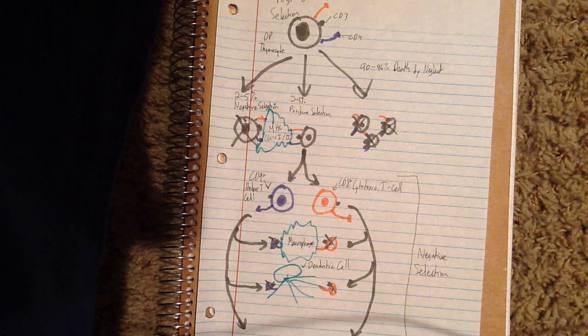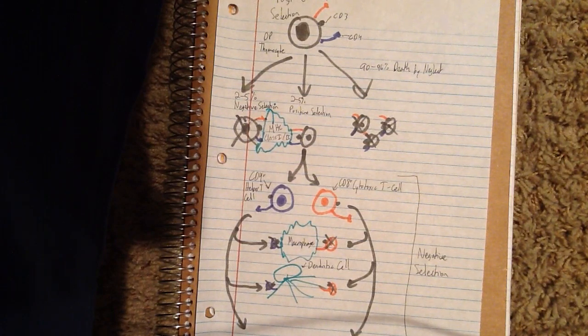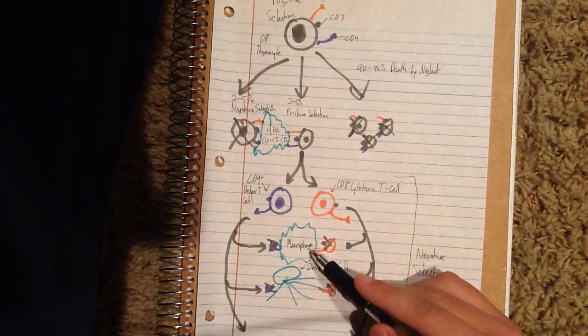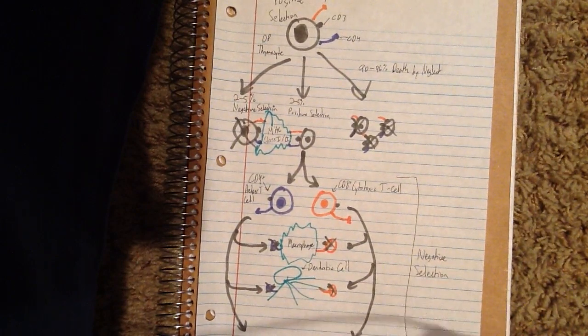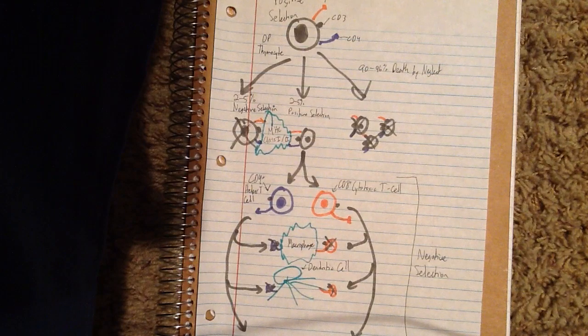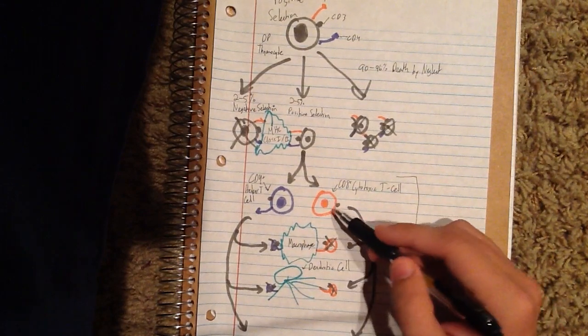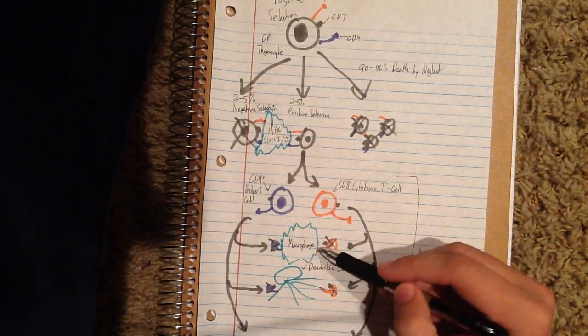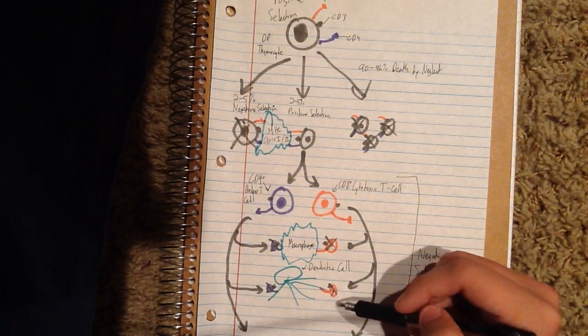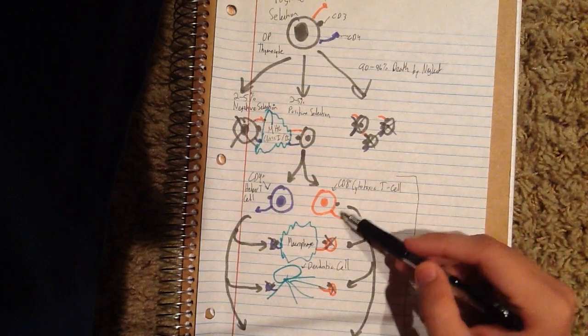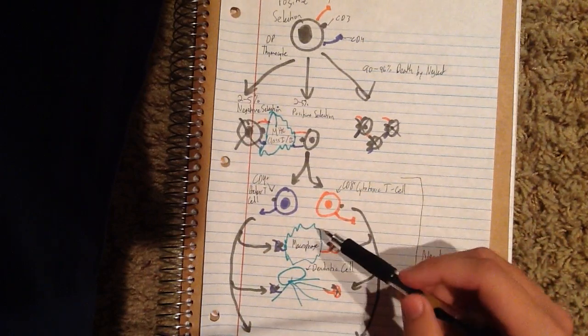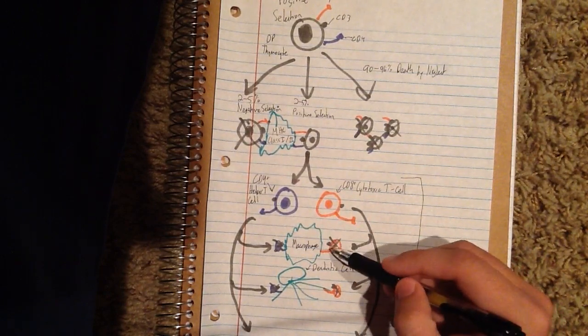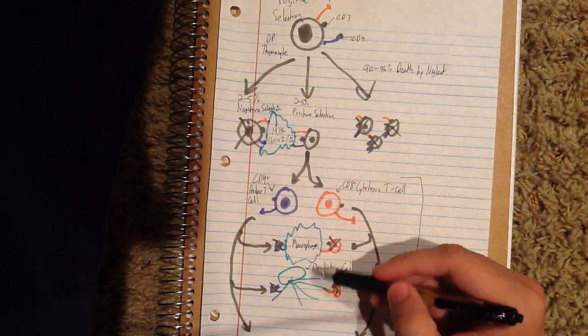Once these T-cells survive positive selection, they're going to go further into this corticomedullary junction, and there they're going to encounter macrophages and dendritic cells. These will exhibit high expression of these MHC self peptide complexes. Once the T-cells pass through, they're going to encounter these, and if they bind to them, then they're also going to commit apoptosis. So there's only going to be a few of these cells that survive. Some of them, even if they are mature helper T-cells or mature cytotoxic T-cells, they may end up dying anyway through negative selection from these macrophages and dendritic cells.